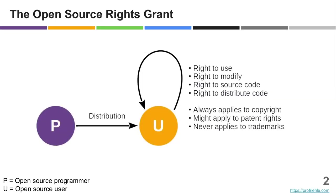To open source means to put some software under an open source license, which by definition grants users — the recipients of the open source code — certain rights: the right to use the software for free and to receive it in source code form.